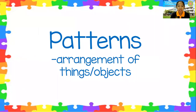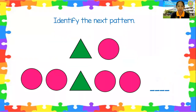Now let's start with our patterns. Patterns are arrangement of things or objects. Look at the first one and identify the next pattern.